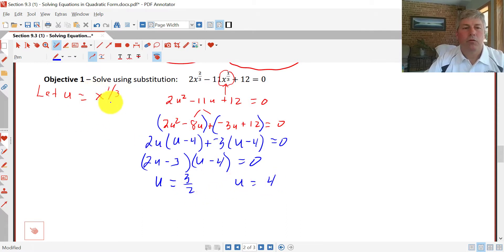But remember, u is x^(1/3). We have to rewrite this: x^(1/3) = 3/2, and x^(1/3) = 4. Well, we don't want x^(1/3). We want x. That's our goal here. We're trying to solve for x.